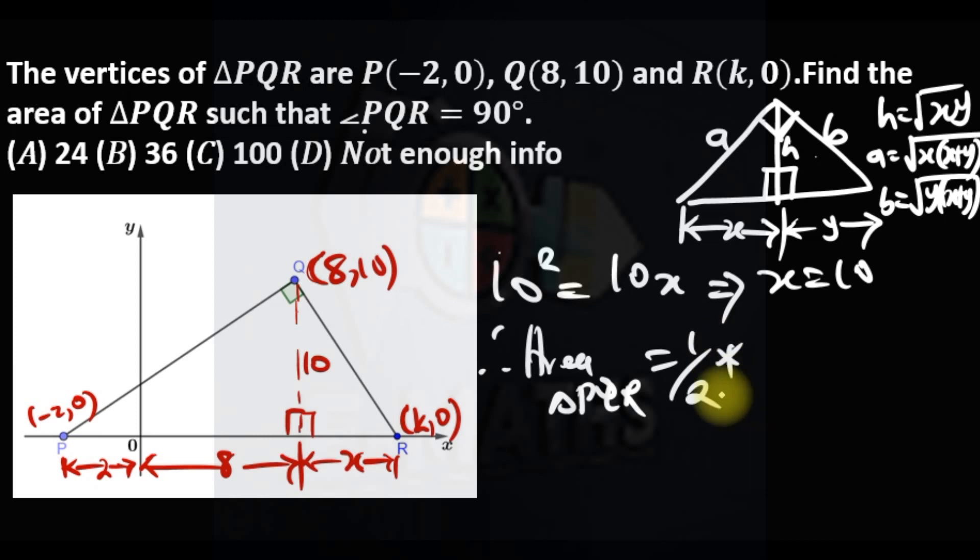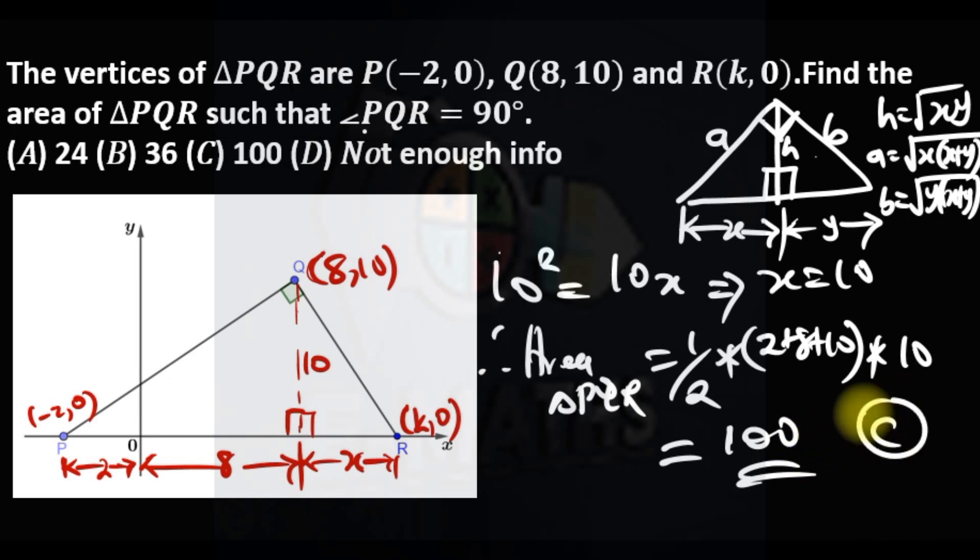...is half base. Base is the total length here, which is 2 plus 8 plus 10, times the height here which is 10. So this is 20 times 10, so the answer is 100. That's our area, which is option C.